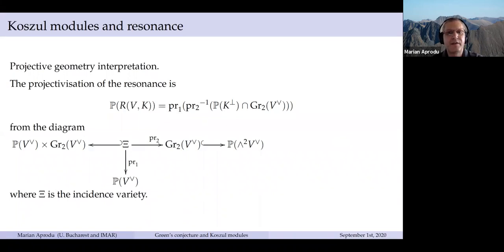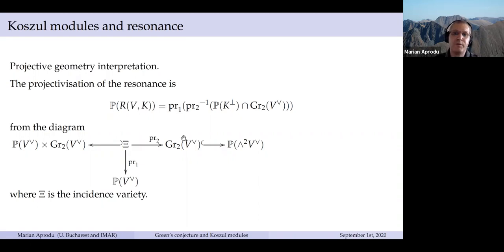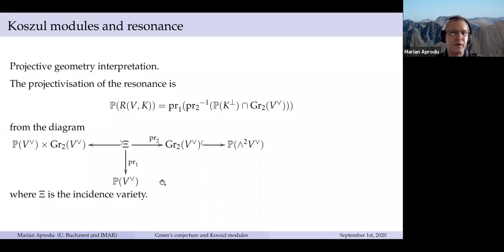The resonance is the affine cone over a projective variety, and the projectivization is obtained as follows: you take K-perp, which sits in wedge-two of V, and we also have the Grassmannian. We consider the intersection between the Grassmannian and the projectivization of K-perp, pull it back on the incidence variety Sigma, and then project it to P(V dual) to obtain the desired projective variety. So basically this variety is given by an incidence relation. The relation between the resonance variety and the Koszul module was given by Papadima and Suciu — the resonance variety is the support of the Koszul module.